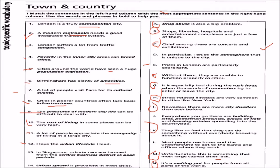Twelve: I love the urban lifestyle. We match it with D — in particular, I enjoy the atmosphere that is unique to the city.